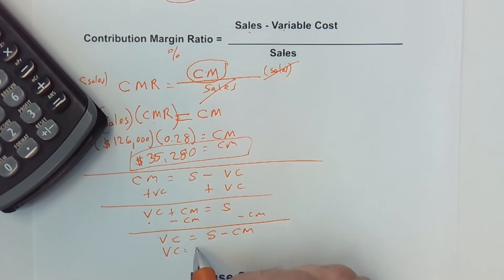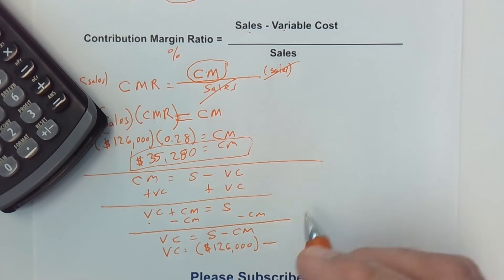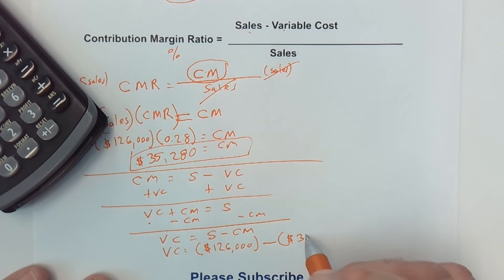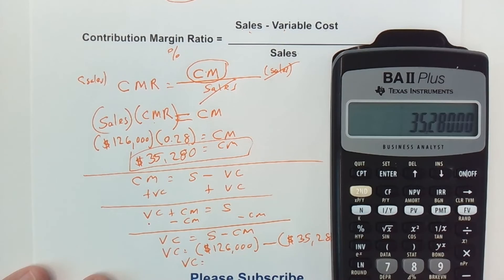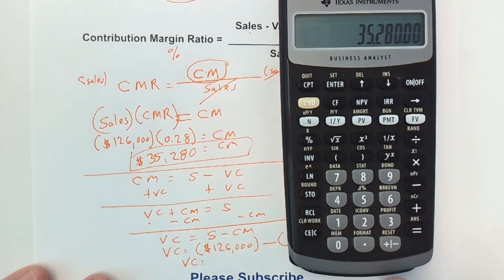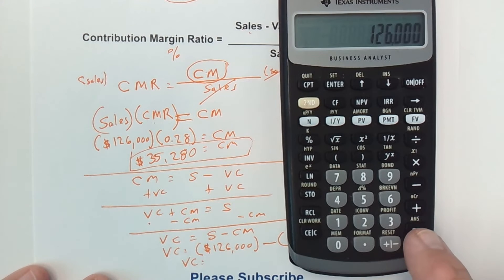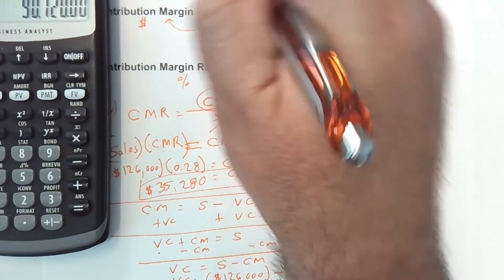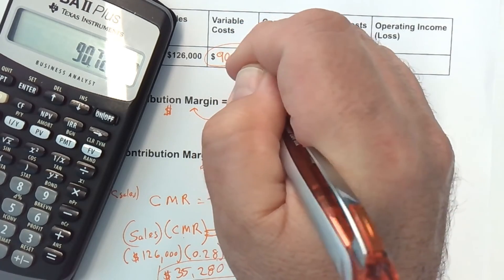Variable costs equals sales minus contribution margin. Our sales figure is $126,000 and our contribution margin is $35,280. Using the calculator, I flip the sign on 35,280 and add it to 126,000, giving a variable cost of $90,720. That is the aggregate variable cost. Let's fill that in on the chart.